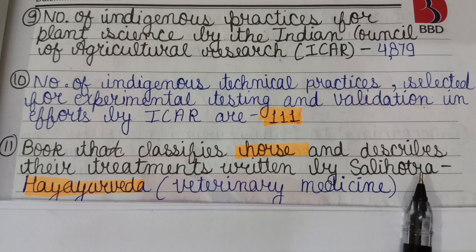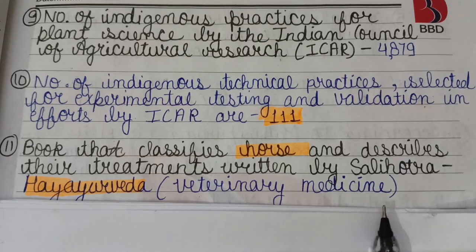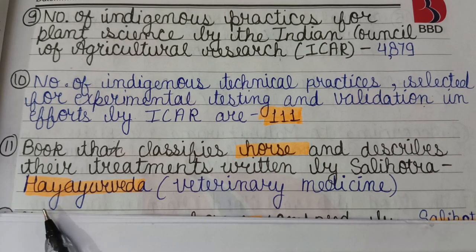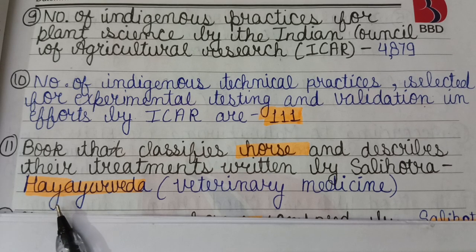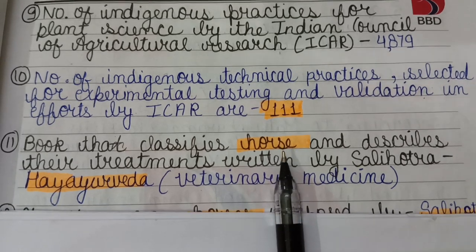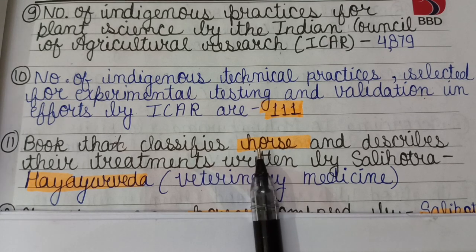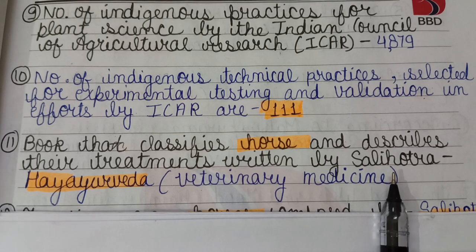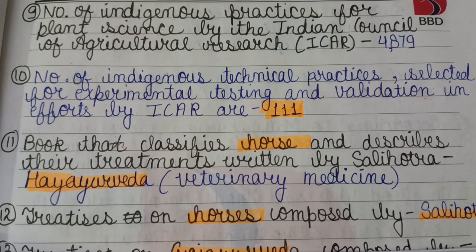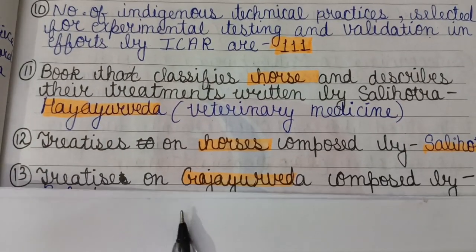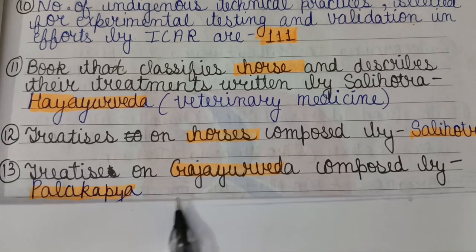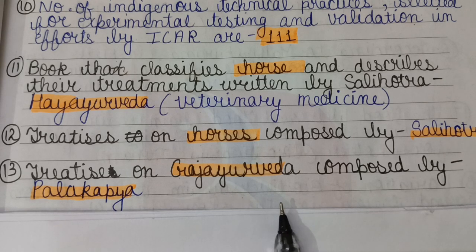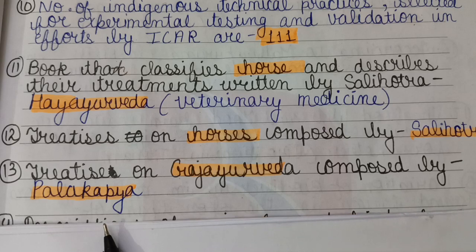The book that classifies horses and describes their treatment, written by Salihotra, is Haya Ayurveda - veterinary medicine for horses. Haya is a synonym for horse. The treatise on Gaja Ayurveda (elephant medicine) was composed by Palakapya.